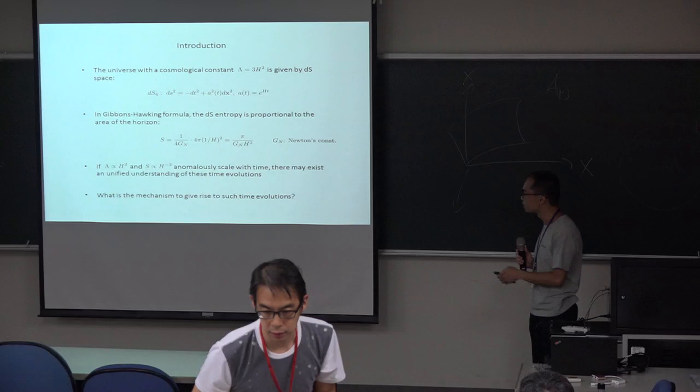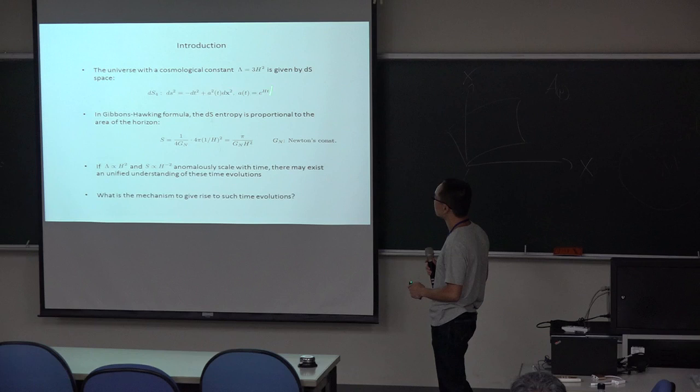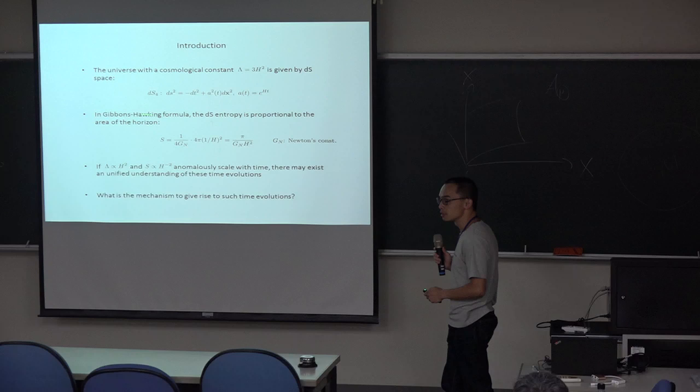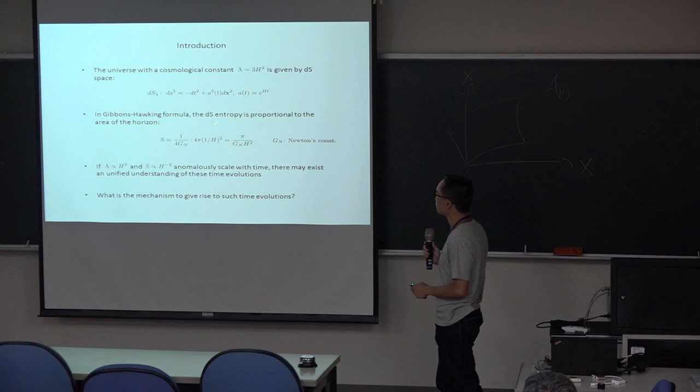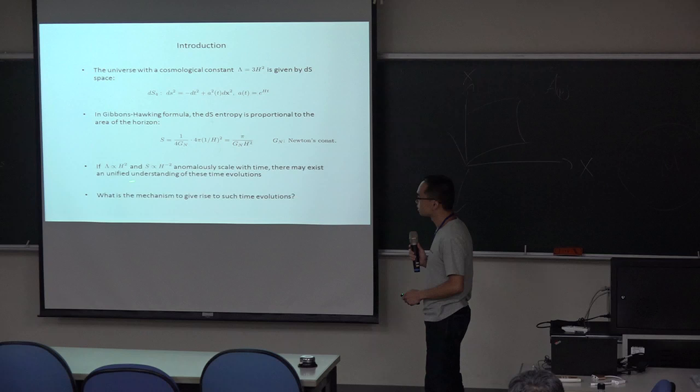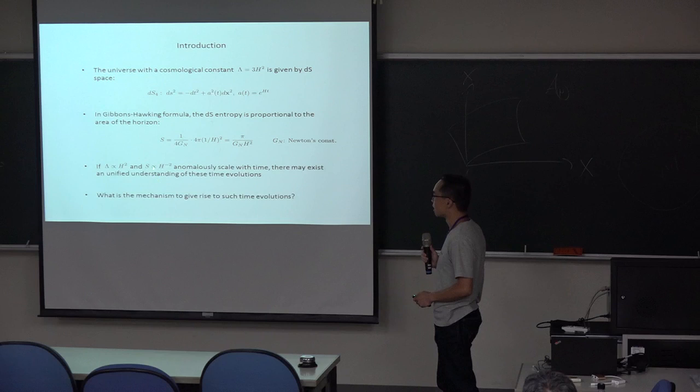This talk is about physical space. What is physical space? We know that the universe is a possible cosmological constant. The important part of the cosmological constant is proportional to the area of the horizon.